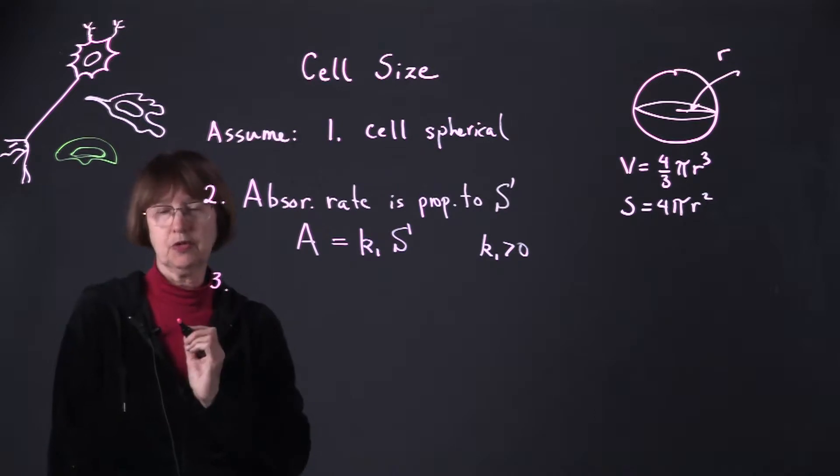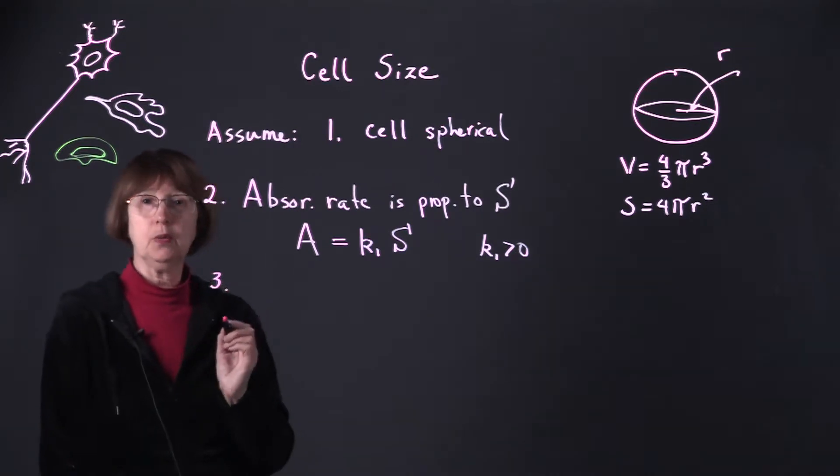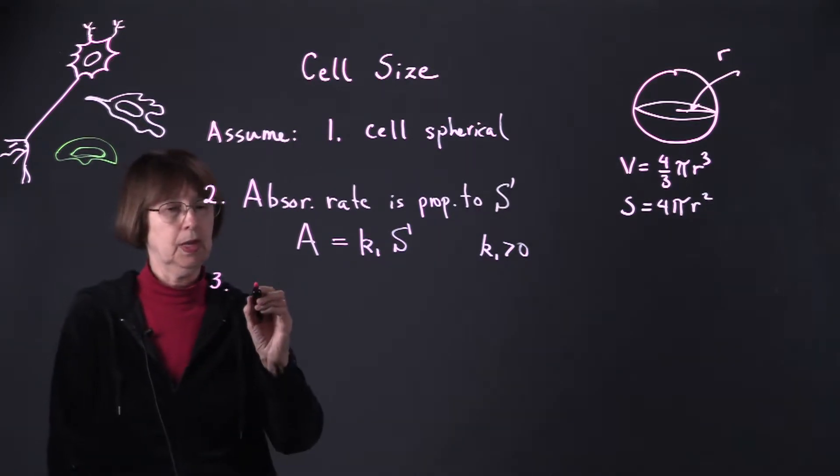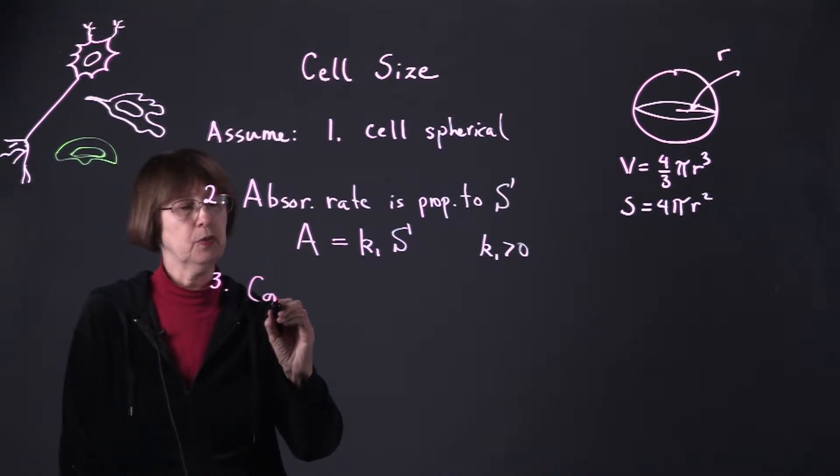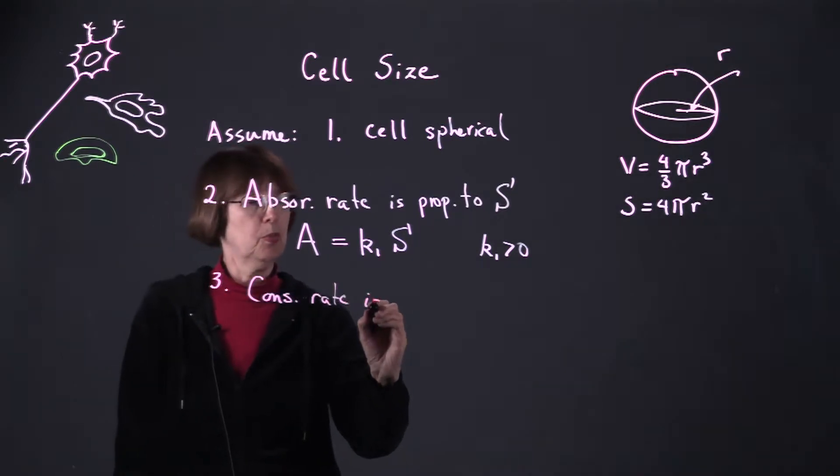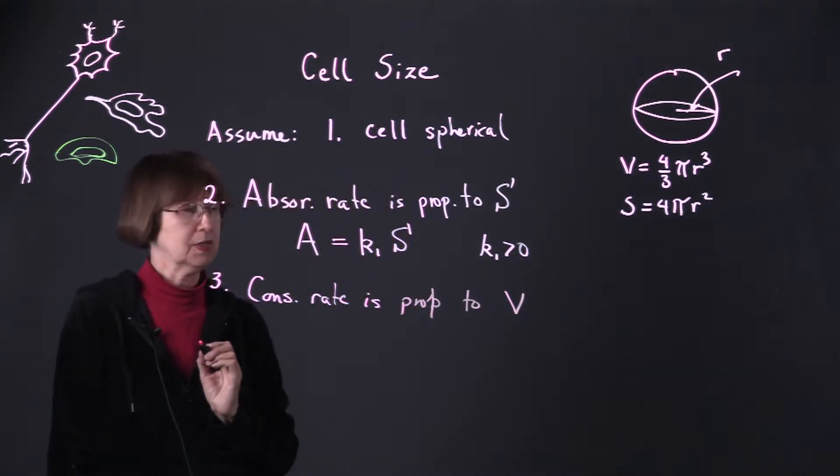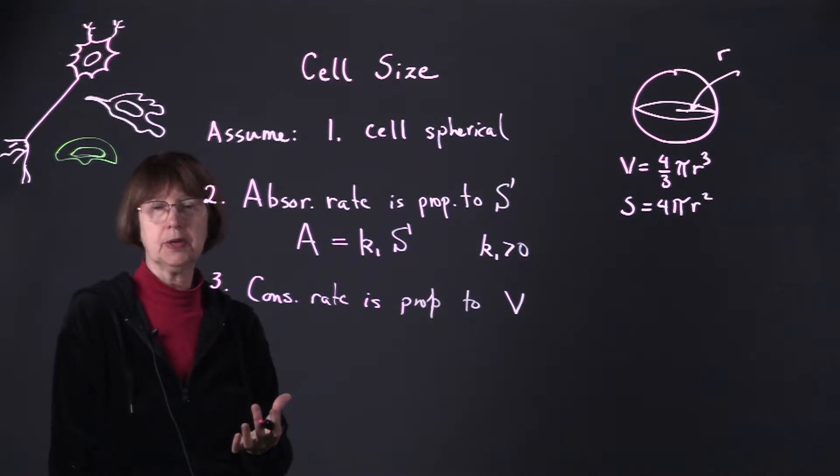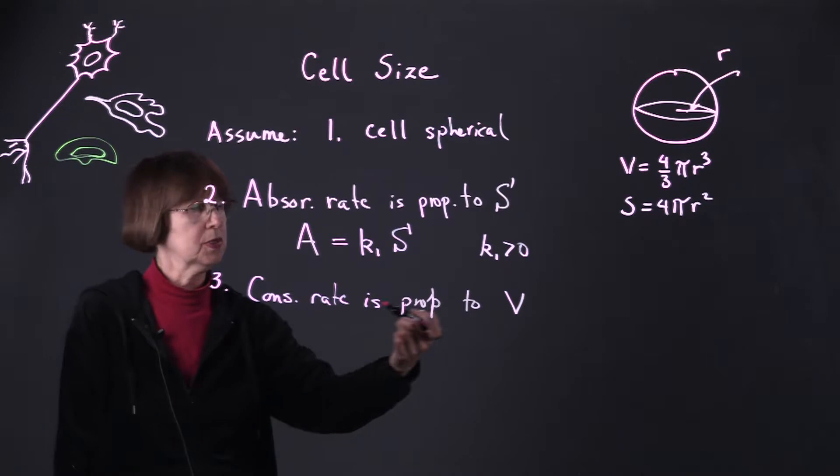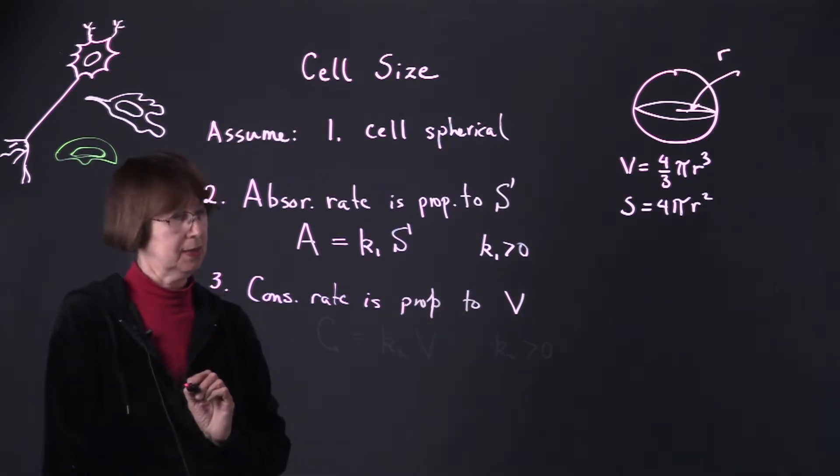In our third assumption, we have to say something about the rate at which nutrients are consumed, and we'll assume that the consumption rate is proportional to the volume of the cell. The bigger the cell, the larger its volume, the more material it has to maintain, the more energy it needs to survive, and so this is a simple way to state that.